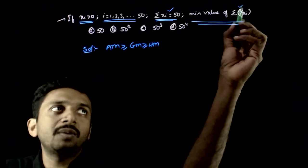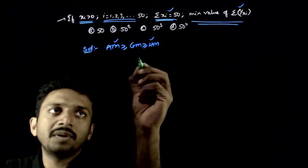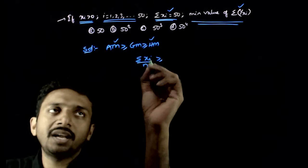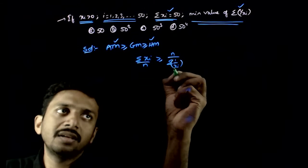So here Sigma Xi and Sigma 1 by Xi - this is mostly an AM and HM related question. So AM, Sigma Xi by N, is greater than or equal to HM, which is N by Sigma 1 by Xi. That's the HM formula.